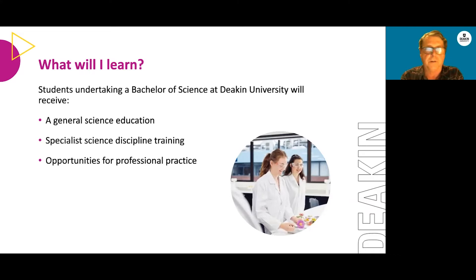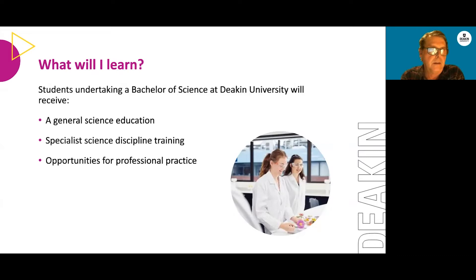The Bachelor of Science program at Deakin provides a general science education. Every student in the Bachelor of Science degree program will be required to undertake a range of basic studies in different science disciplines, so that you gain a broad knowledge of areas of science and relevant maths. This is mostly undertaken at first year level.